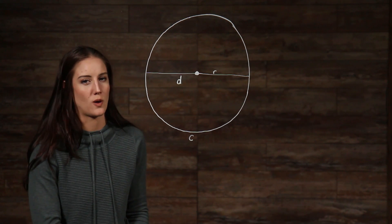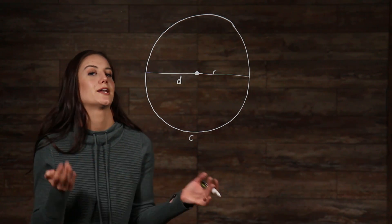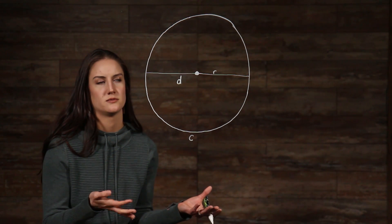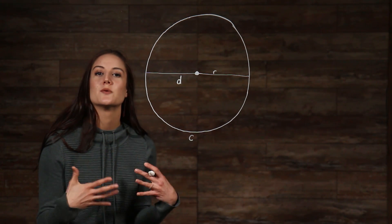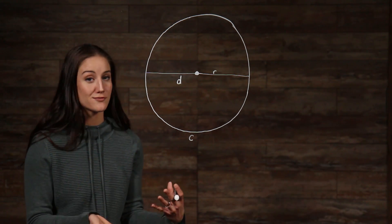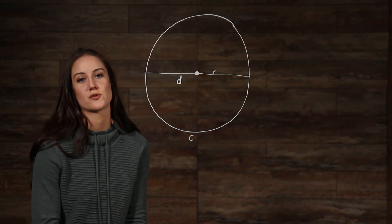If someone were to just hand you a piece of paper with a circle on it, well, actually that would be pretty weird. But let's say we wanted to find the radius, diameter, and circumference of that circle, and all we have is a ruler.